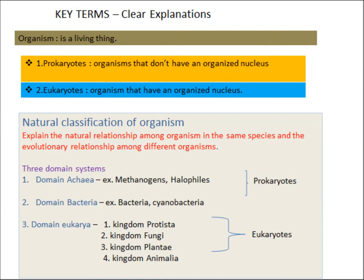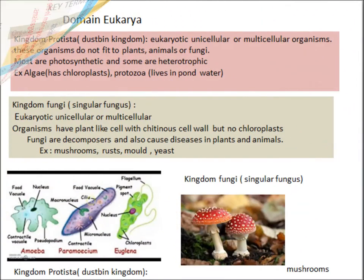Now turn to the next page. There are four kingdoms belonging to domain Eukarya. Let's see about kingdom Protista. These organisms can be unicellular or multicellular. They do not resemble plants, animals, or fungi, which is why this kingdom is referred to as the dustbin kingdom.